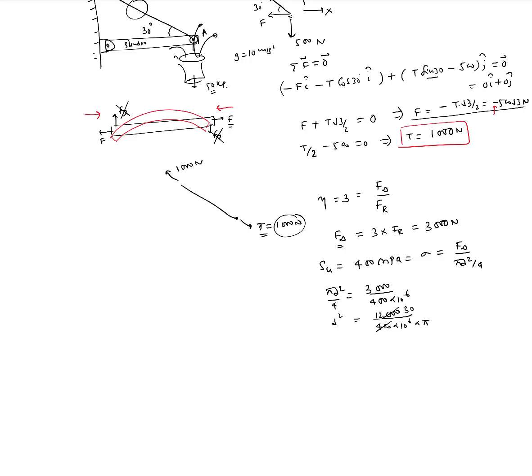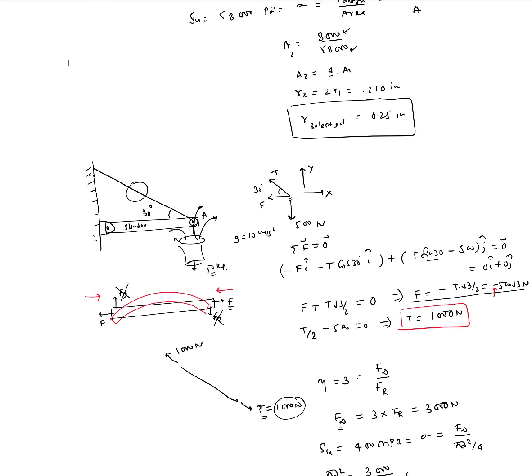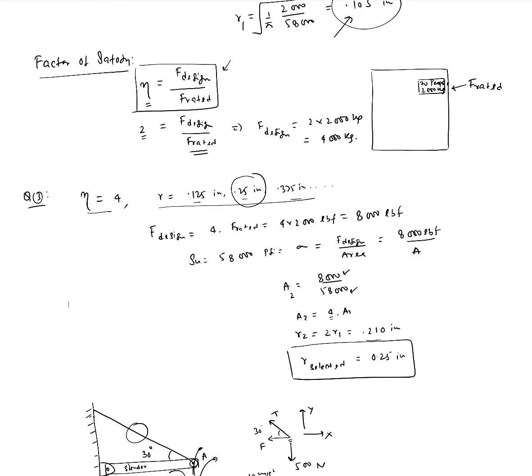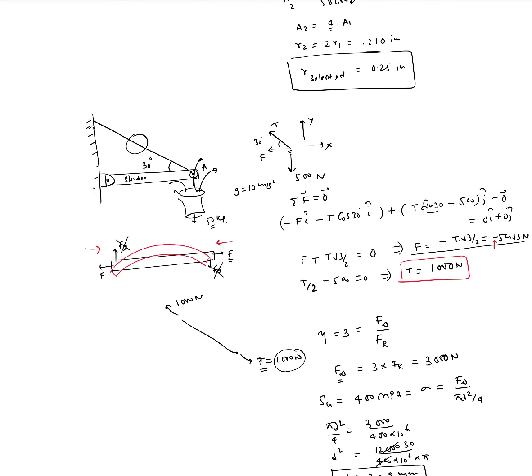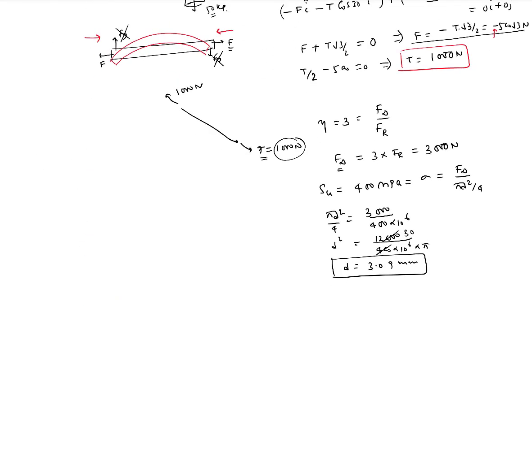Let me punch in the numbers. We get 30 divided by 10 to the power 6 divided by 3.14, and then I'll take the square root, and I get d equal to 3.09 millimeters. That's the diameter I would have for this case. Of course, there may not be 3.09 millimeter diameter. Let's say the next standard size is 3.5 millimeters. In that case, instead of picking this, you'll pick 3.5 millimeters.